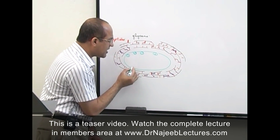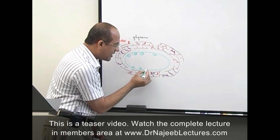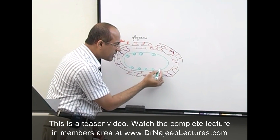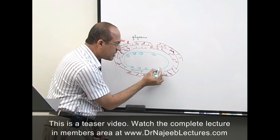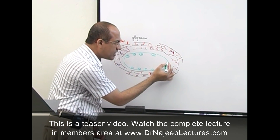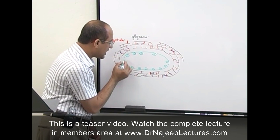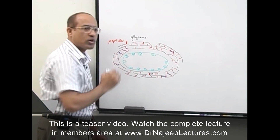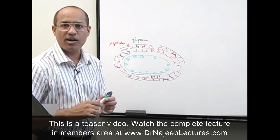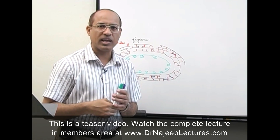Energy production is one of the functions of the cytoplasmic membrane. The most important function of the cell wall peptidoglycan is to prevent osmotic burst. The answer is to prevent the bacteria from osmotic burst.